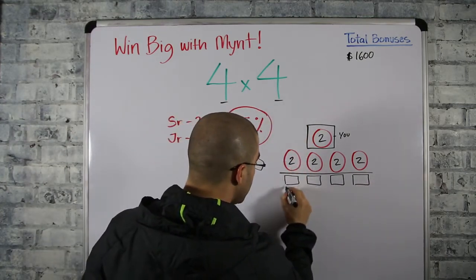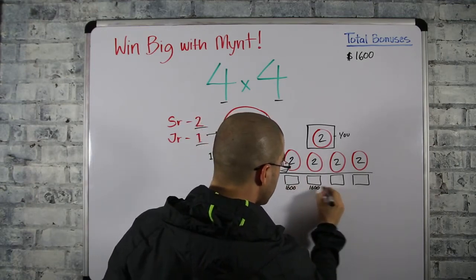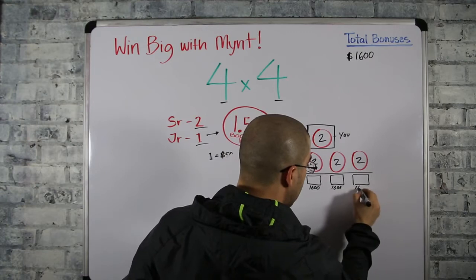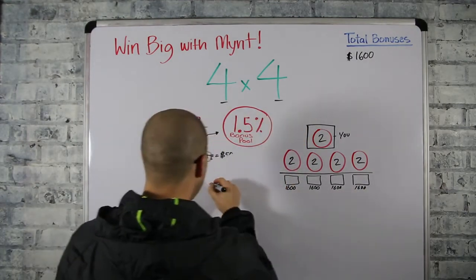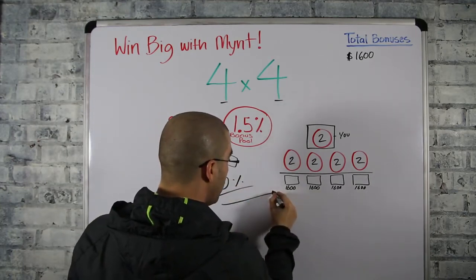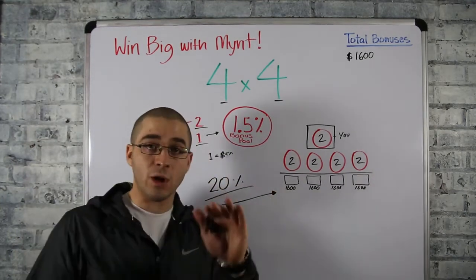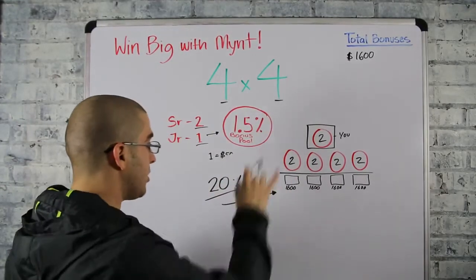So now this guy just made sixteen hundred dollars, sixteen hundred dollars, sixteen hundred dollars. So now not only have you helped your four friends make sixteen hundred dollars, but Mint rewards you by giving you a twenty percent check match on all of their bonuses. Doesn't take away from their bonuses, it just adds on into your account.